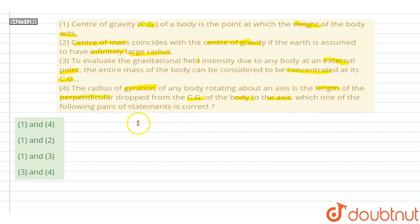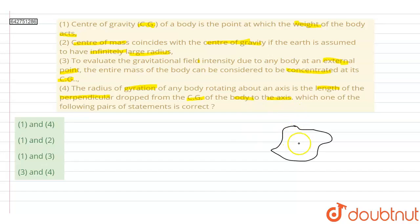The first statement — center of gravity of a body is the point at which weight of the body acts — is true. Center of gravity is the point in a body where the entire weight appears to be concentrated. So at this point, we can assume that the force of weight mg is applied at the center of gravity.